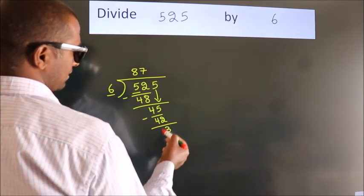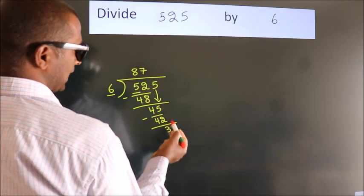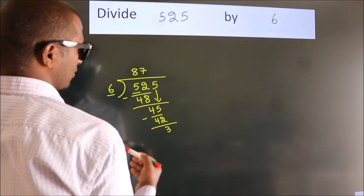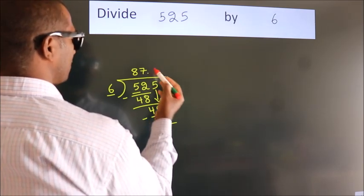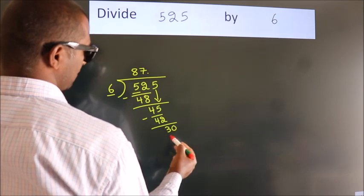After this, there are no more numbers to bring down. So what we do is put a dot and take 0, giving us 30.